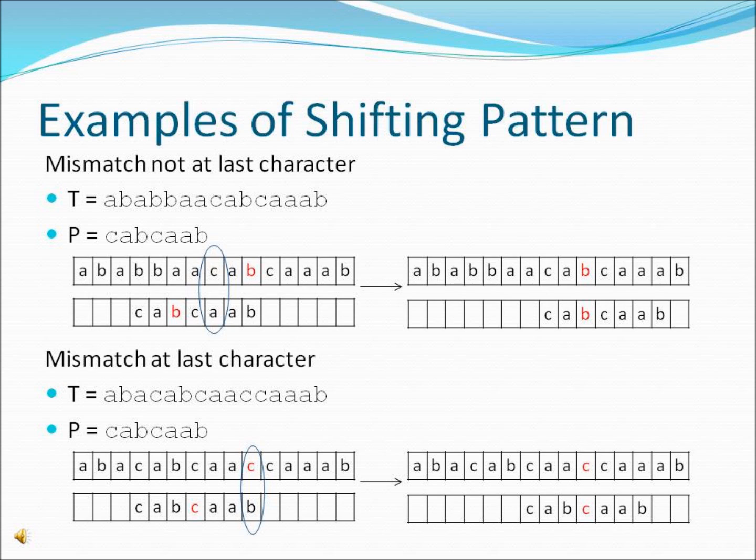The rightmost B in the pattern is then found, and the pattern is shifted along so this B matches the B of the text string which previously lined up with the last character of the pattern. Hopefully it is now clearer why the last character is not included when creating the table of rightmost occurrences. Otherwise, in this example, we wouldn't know where the next B was.